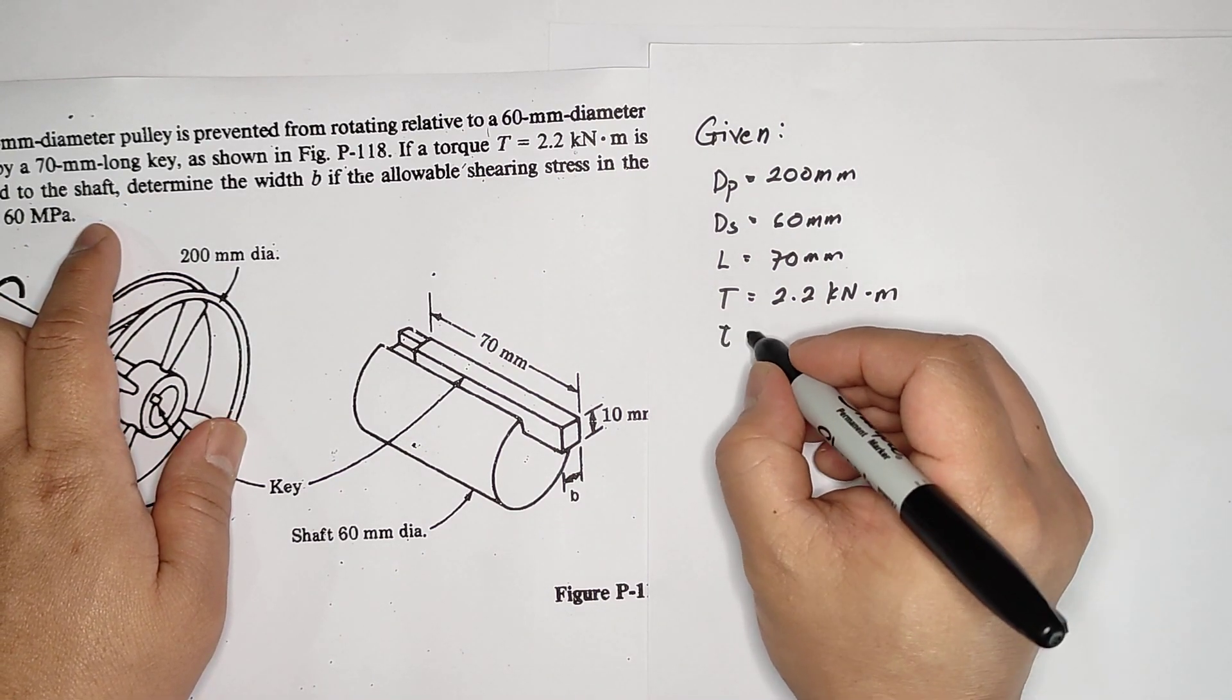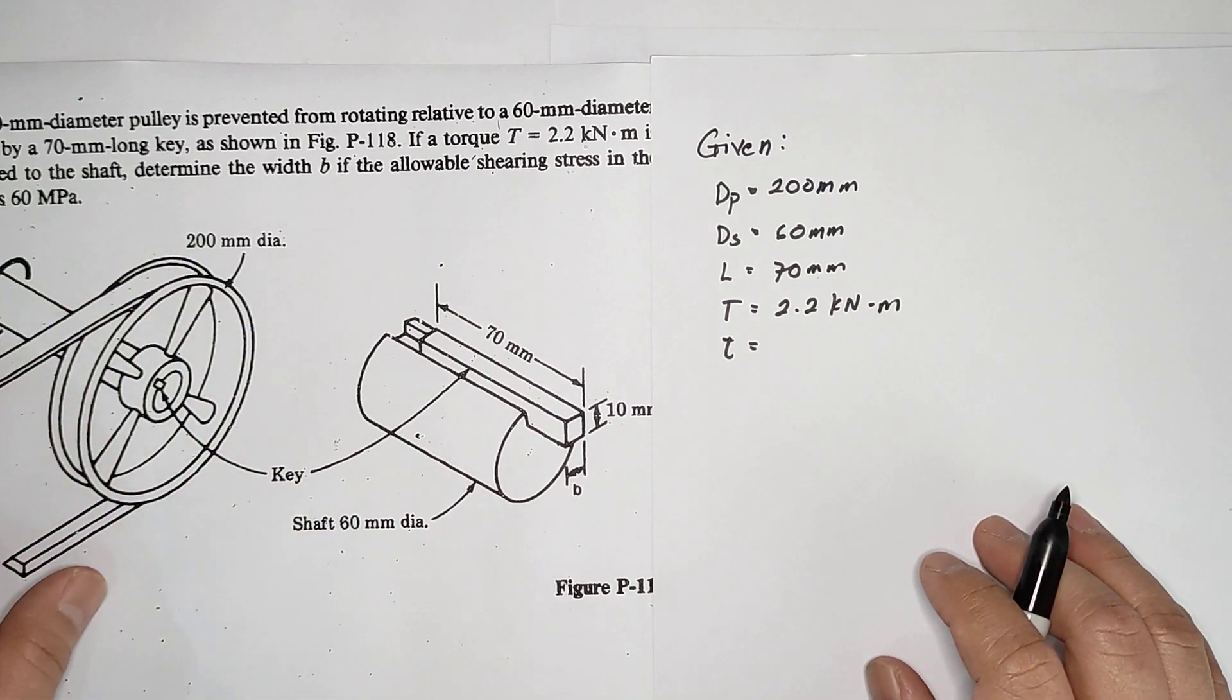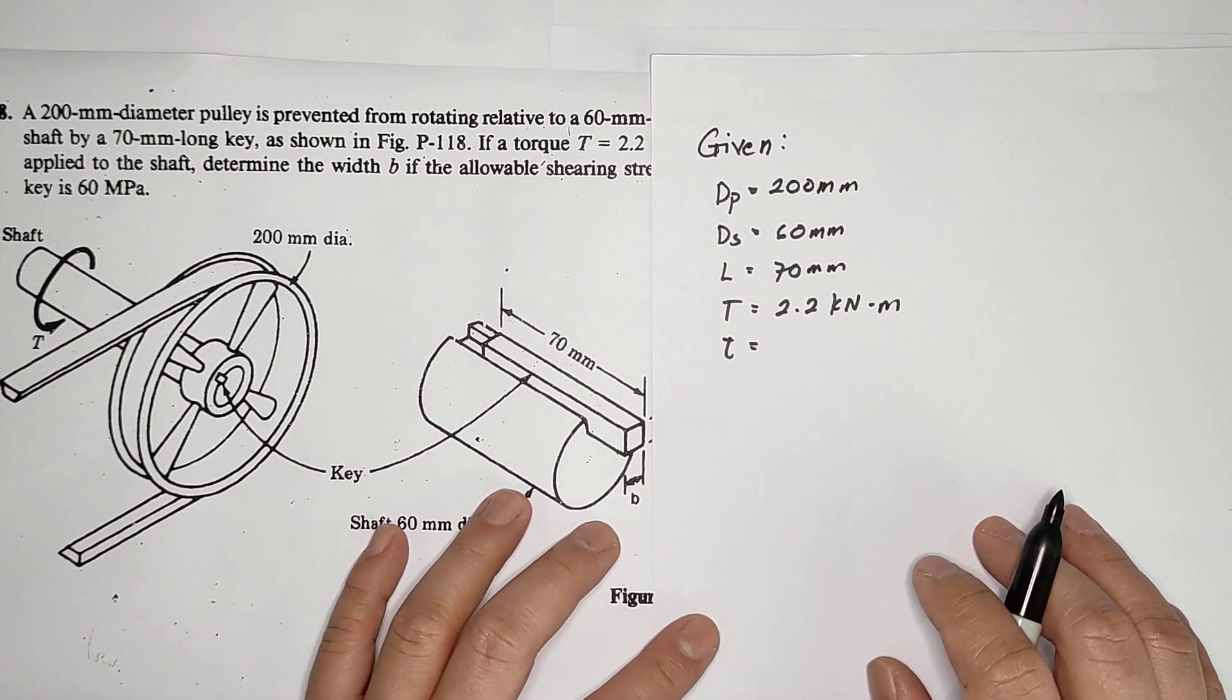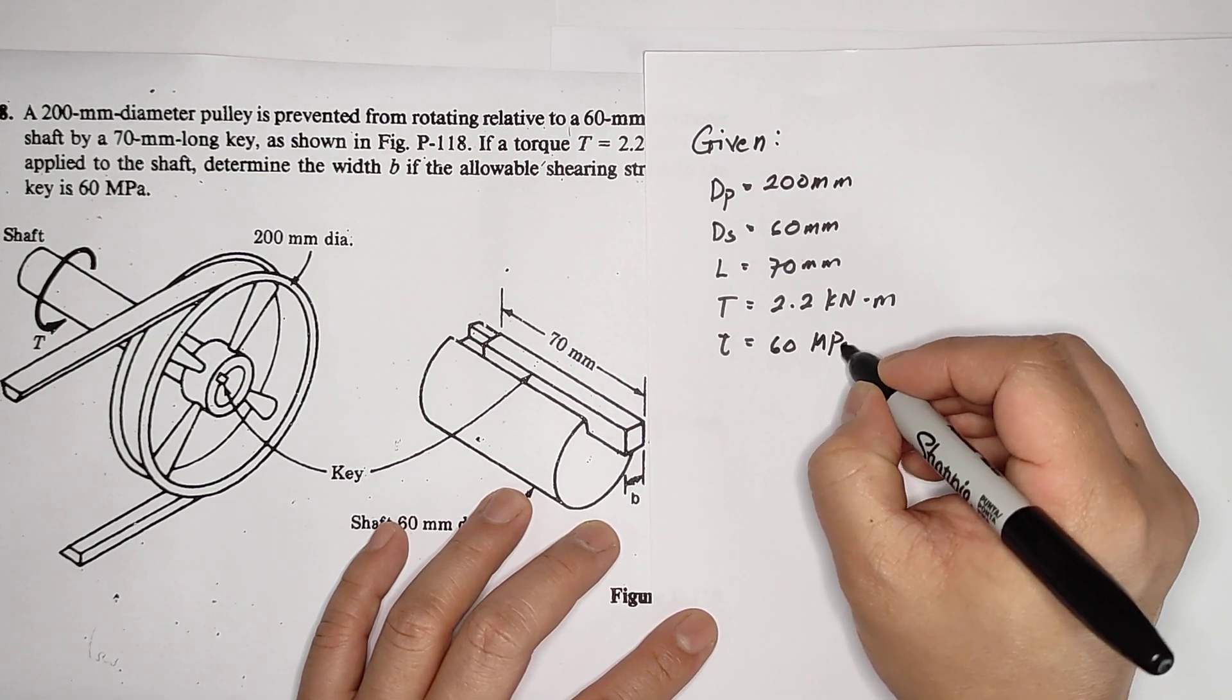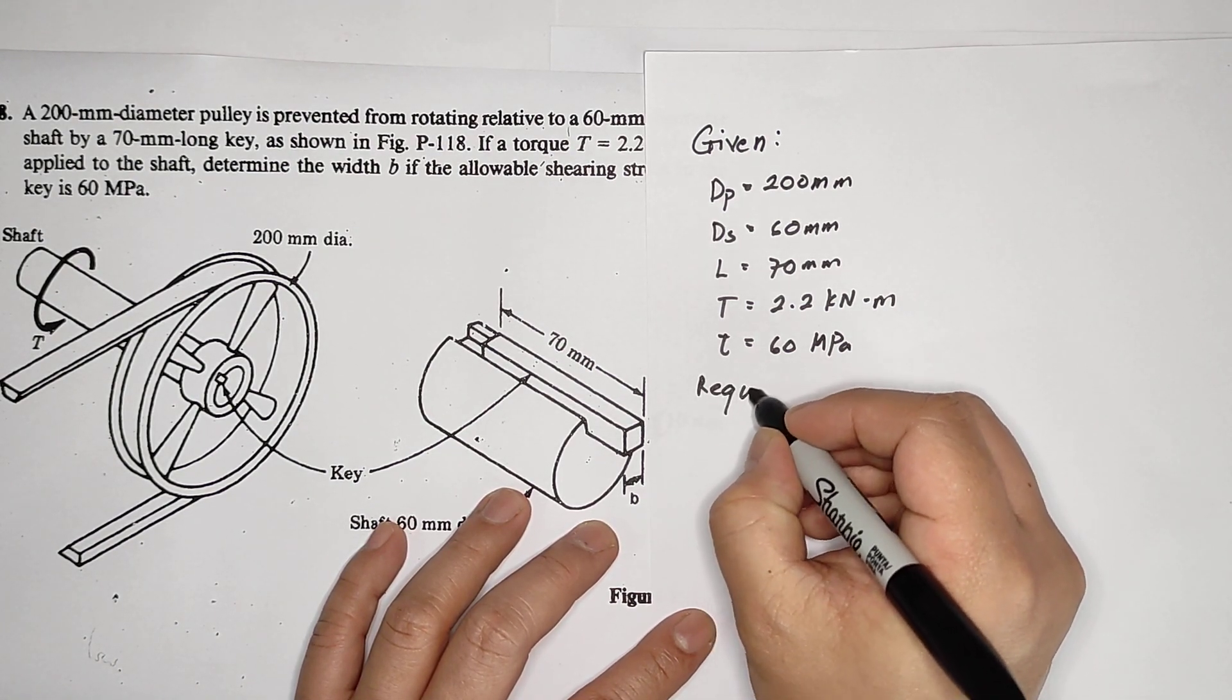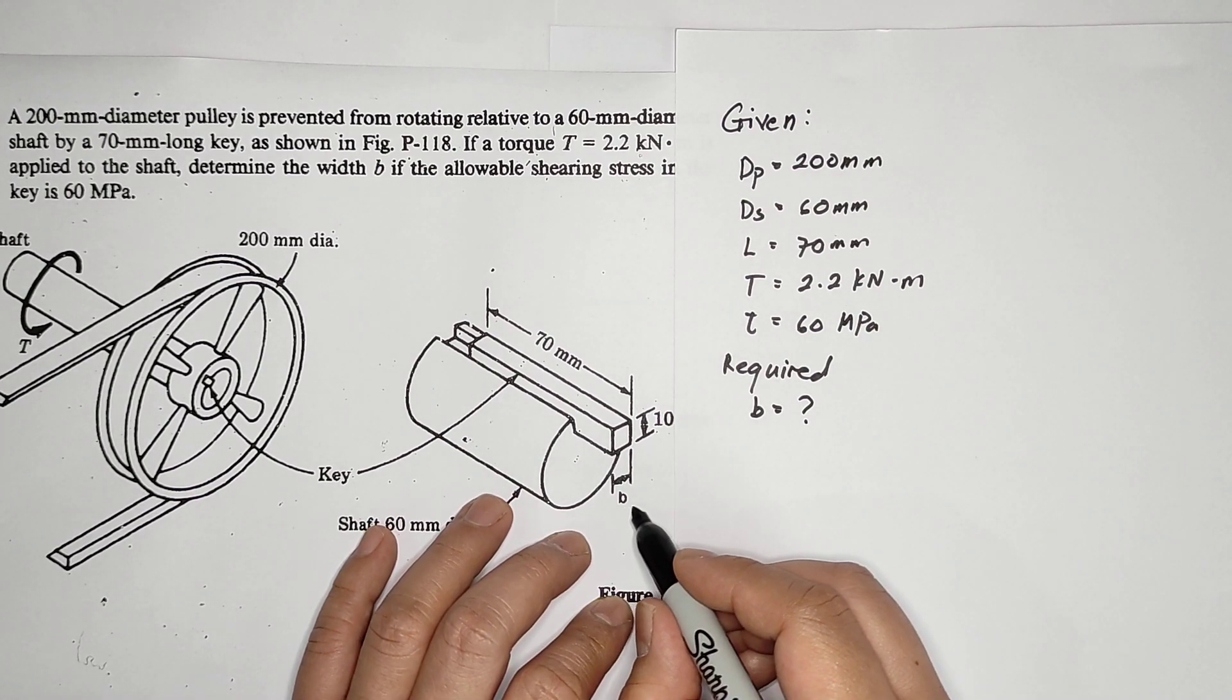The allowable shearing stress in the key, we are repairing the key, don't look at the pulley, don't look at the belt, don't look at the shaft, look at the key. This is where we are studying, so that is 60 megapascal. The required, we are required to compute for the width B.